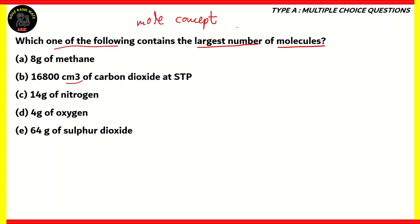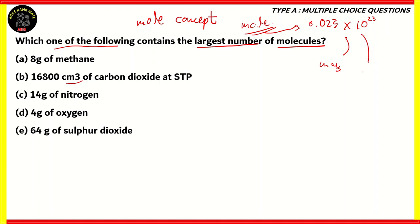For this question, we will use the mole concept. In order to count the number of molecules, atoms, or formula units in chemistry, we have a quantity called the mole. Just as we use a dozen for 12 of something or a gross for 144, we use the term mole to refer to 6.023 × 10²³ of something — whether atoms, molecules, or formula units. The mole can be calculated from mass, volume, or number of molecules. Although the question asks for the largest number of molecules, it's enough to find which option has the largest number of moles, because the one with the most moles will have the most molecules.